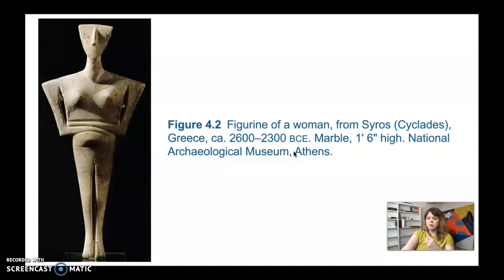Most Cycladic sculptures represent nude women, much like the Venuses we looked at in the prehistoric period. These examples often depict women with their arms folded across their abdomens, possibly symbolizing fertility or reproduction. These sculptures are found in caves and in settlements, and they vary in height from a few inches to almost life-size.